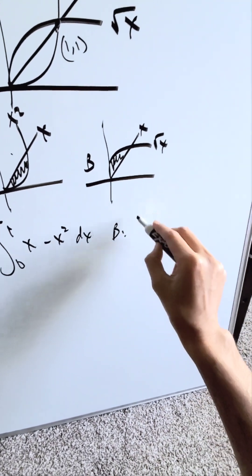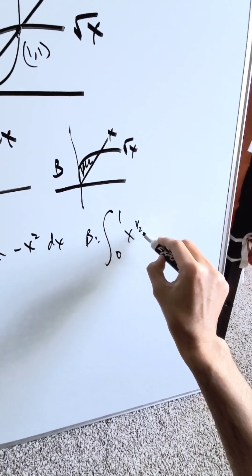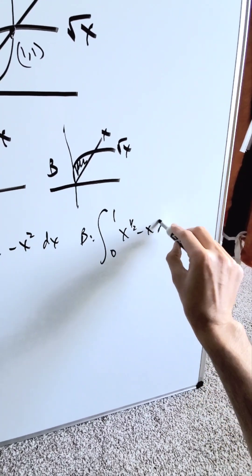The B integral will be 0 to 1. You have upper function root x, I'll write as x to the 1/2, lower function x dx.